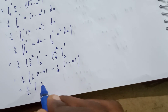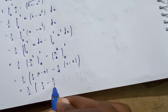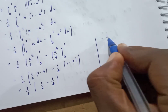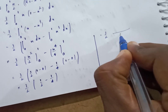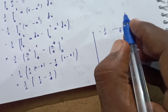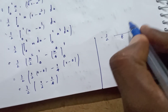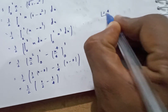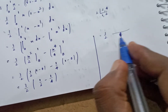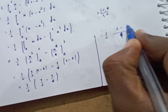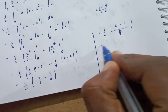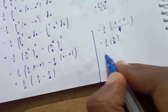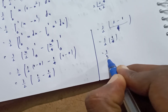Evaluating: 3 by 2 times (x square by 2 minus x to the 4 by 4) from 0 to 1 equals 3 by 2 times (1 by 2 minus 1 by 4). Taking LCM 4 gives 3 by 2 times (2 by 4 minus 1 by 4) equals 3 by 2 times 1 by 4, which equals 3 by 8. The final answer is 3 by 8.